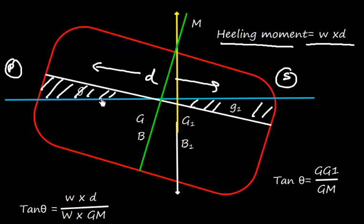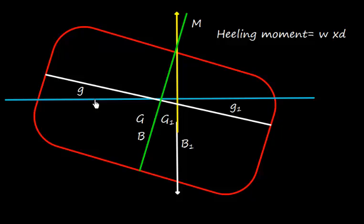Now since there is a shift of g to g1—small g to small g1—the center of gravity of the ship will also shift from G to G1, capital G to G1. This force of buoyancy will also shift like this, because now this weight force is not acting on G, it is acting on G1. The force of buoyancy will also shift like this.